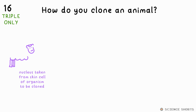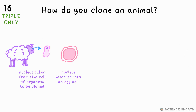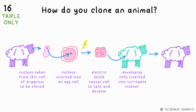You take the nucleus from a cell from the animal you want to clone and insert it into the egg cell of another of the same species. You then insert the artificially fertilised egg into a surrogate mother and the clone will develop.